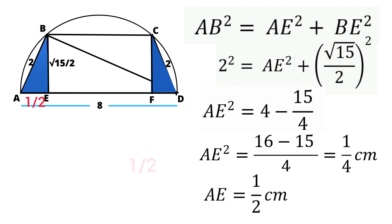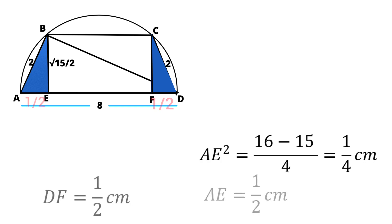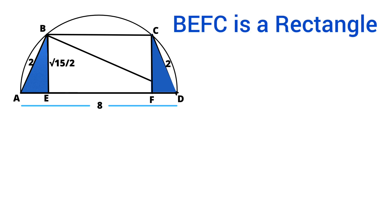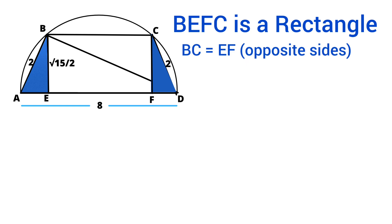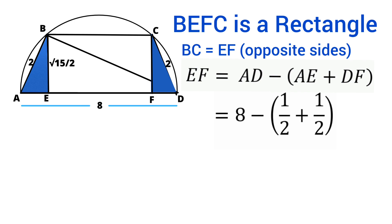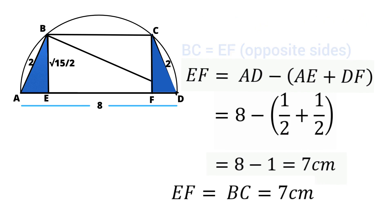Similarly, we can prove that the length of DF is 1/2 cm. In the diagram, BEFC is a rectangle in which BC and EF are opposite sides and are equal to each other. EF = AD − (AE + DF) = 8 − (1/2 + 1/2) = 8 − 1 = 7 cm. Since EF and BC are equal, the length of BC is also 7 cm.